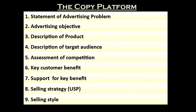Three: description of the product — a quick overview of the product, its features and benefits. Four: description of the target audience — a brief overview of the needs and characteristics of the target audience. Five: an assessment of competition, which includes assessment of rival offerings and advertising campaigns, especially in case of competitive advertising.